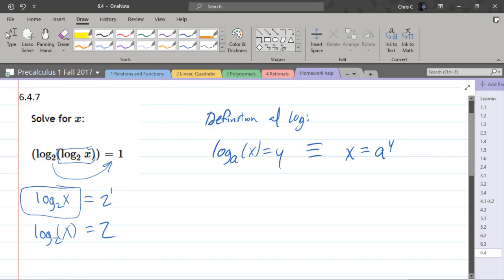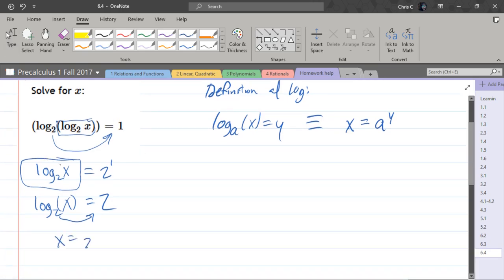And we're going to use the definition a second time, and we're going to move again the base to the other side. So we have base 2 to the 2 power, which 2 squared is 4, and x equals 4 is going to be our solution for the original equation up here.